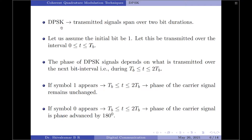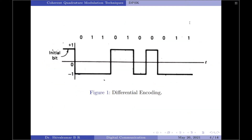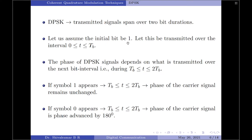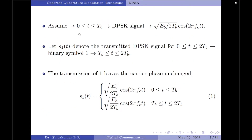Since in differential encoding the phase of the current bit depends on the phase of the previous bit, the DPSK system will have its transmitted signals spanning over two bit intervals. As shown in the diagram, let us assume that the initial bit is symbol 1, transmitted over the bit duration 0 to Tb. The DPSK signals can be generated depending upon what is the transmitted bit over the next interval, Tb to 2Tb. If symbol 1 appears over the second bit interval, the phase of the carrier signal remains unchanged; if symbol 0 appears, the phase of the carrier signal is advanced by 180 degrees.